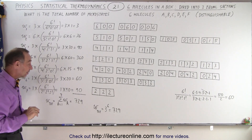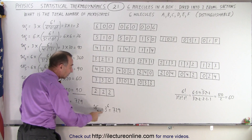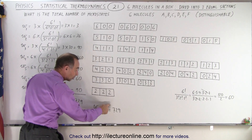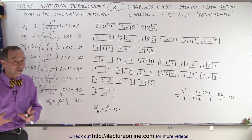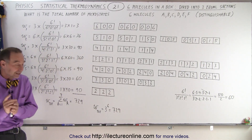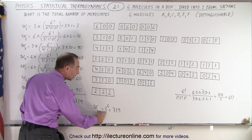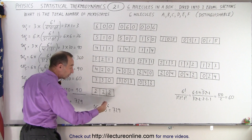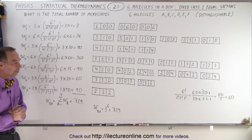How else can we calculate that? We can take the total number of microstates, and that's equal to three partitions raised to the power of six molecules. Three to the sixth power also gives us 729, so the total number of microstates can be calculated by taking the total number of partitions in the box and raising it to the sixth power, giving 729 different microstates.